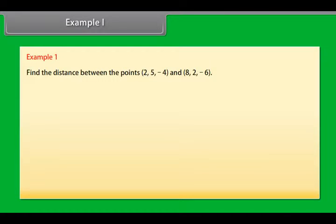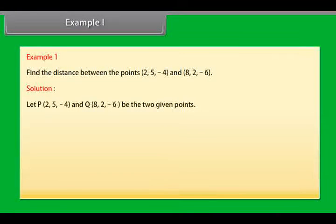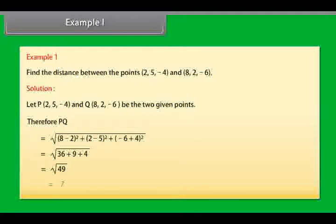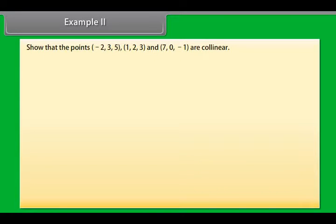Example 1. Find the distance between the points 2, 5, minus 4 and 8, 2, minus 6. Solution. Let P, 2, 5, minus 4 and Q, 8, 2, minus 6 be two given points. Therefore, P, Q is equal to square root of 8 minus 2 square, plus 2 minus 5 square, plus minus 6 plus 4 square, is equal to square root of 36 plus 9 plus 4, is equal to square root of 49, is equal to 7.